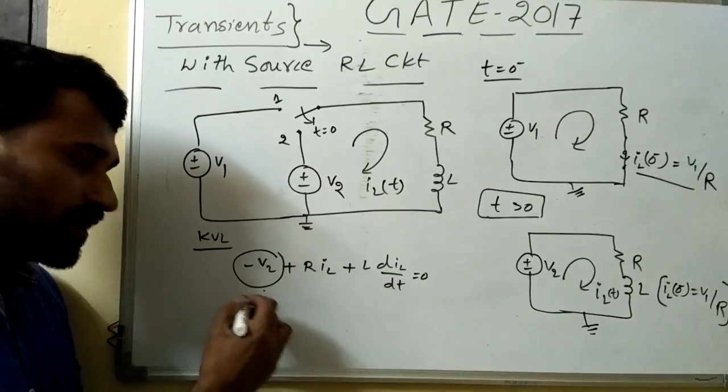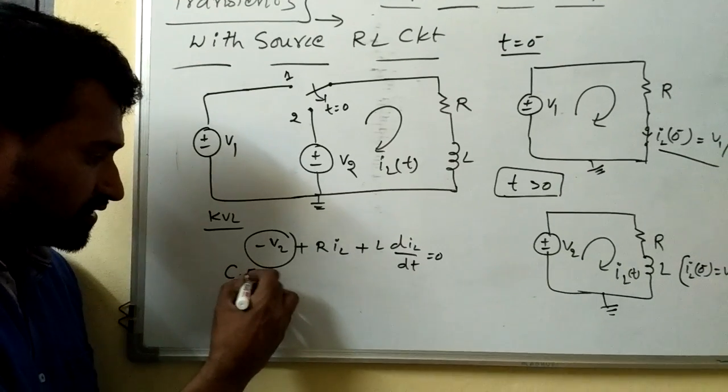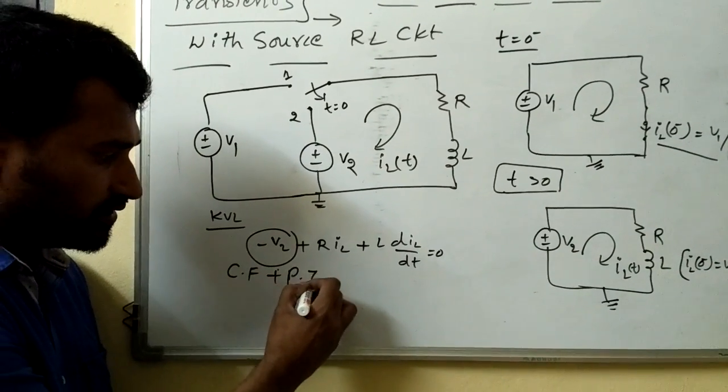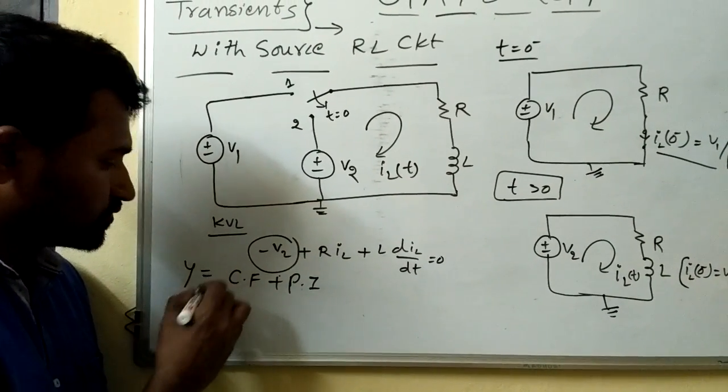So we need to go for two solutions, that is, one is complementary function plus particular integral, this is the blackback of the total solution.